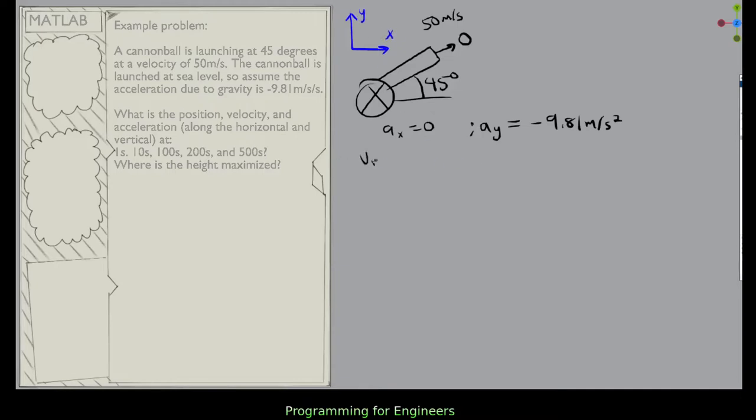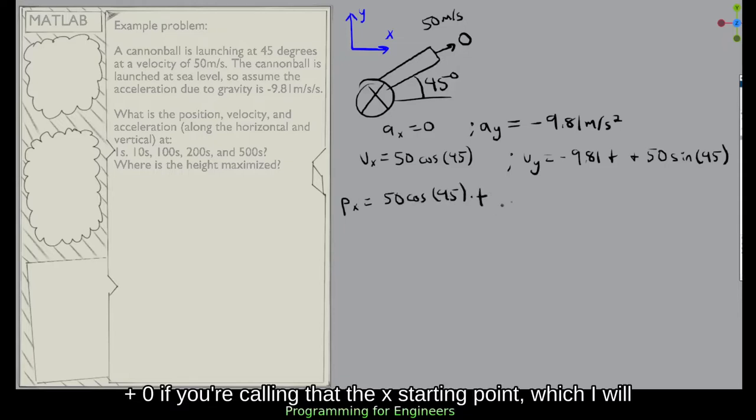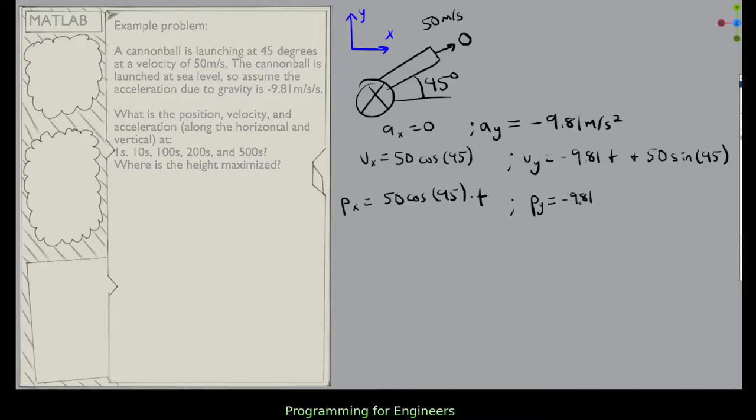And we can integrate here. So vx is 50 cosine of 45, and vy is negative 9.81 t plus 50 sine of 45. So then my position in x is 50 cosine of 45 times t. And my position in y is negative 9.81 divided by 2t squared plus 50 sine of 45 t plus p naught. And assuming I start at a height of 0, that's going to be 0.